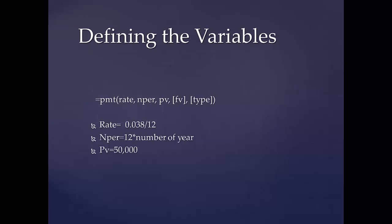The rate is the interest rate per period, which can be calculated by taking the annual interest rate divided by the number of periods per year. N per is the total number of periods, calculated by multiplying the number of periods per year by the number of years the loan is being repaid. PV is the value the loan is issued for.